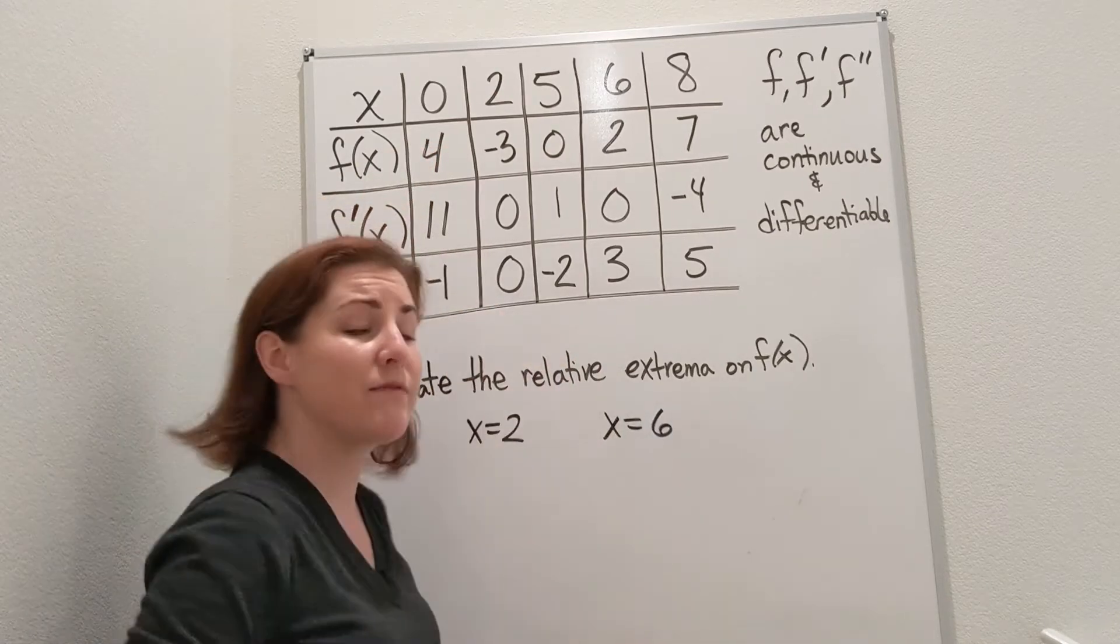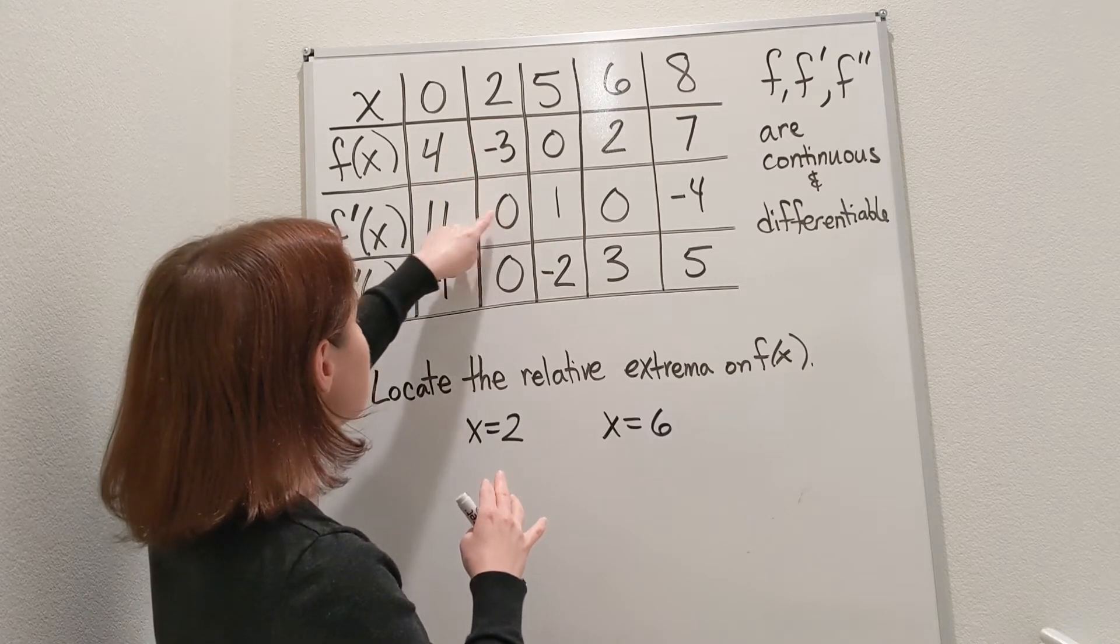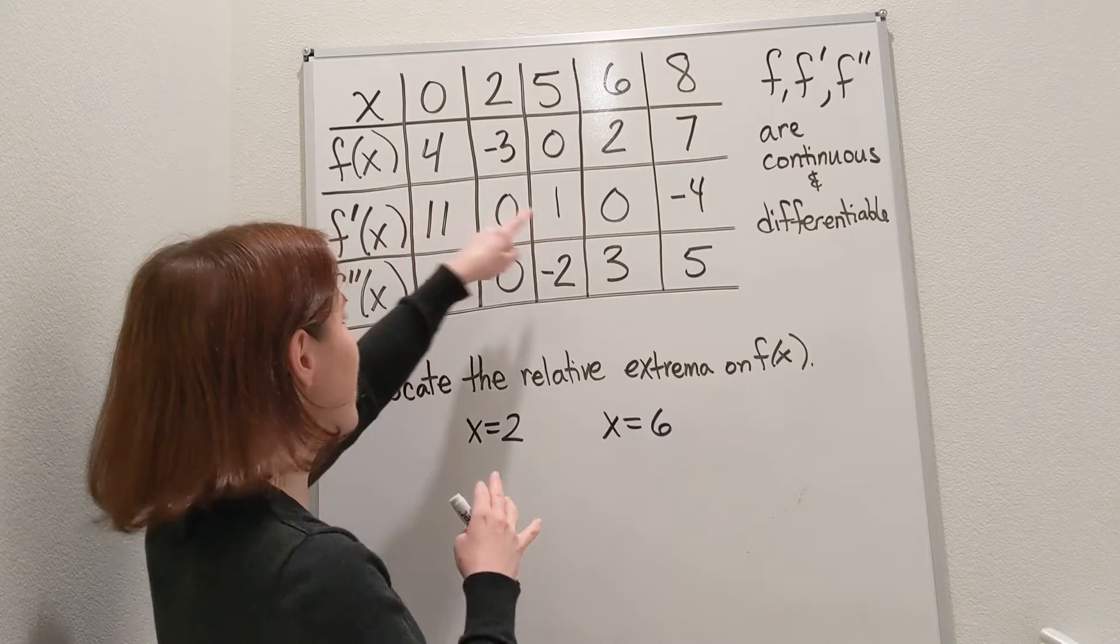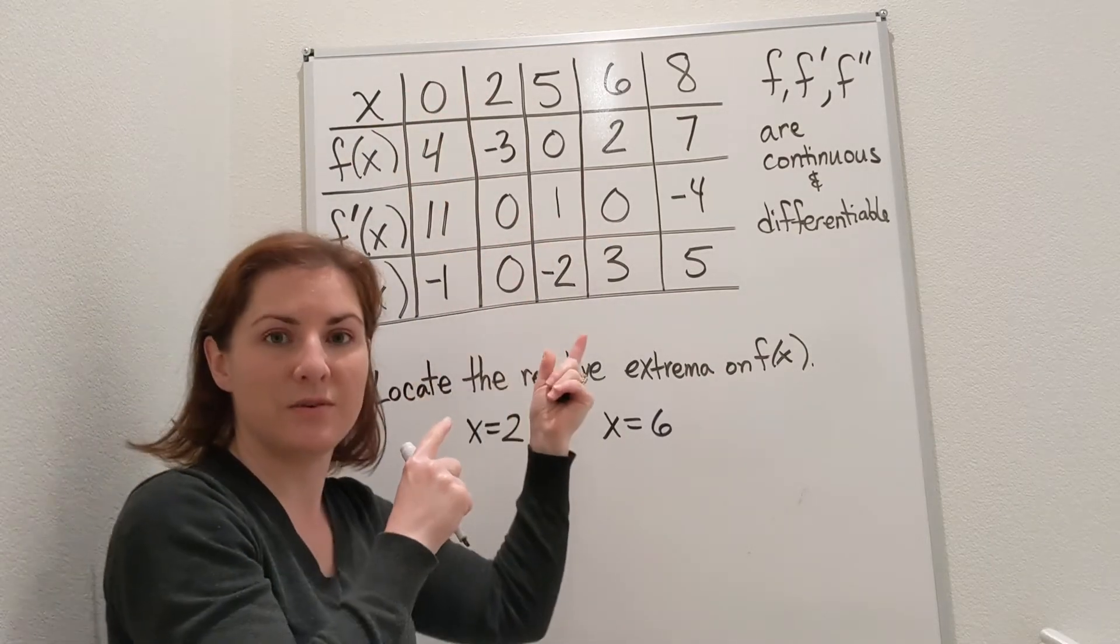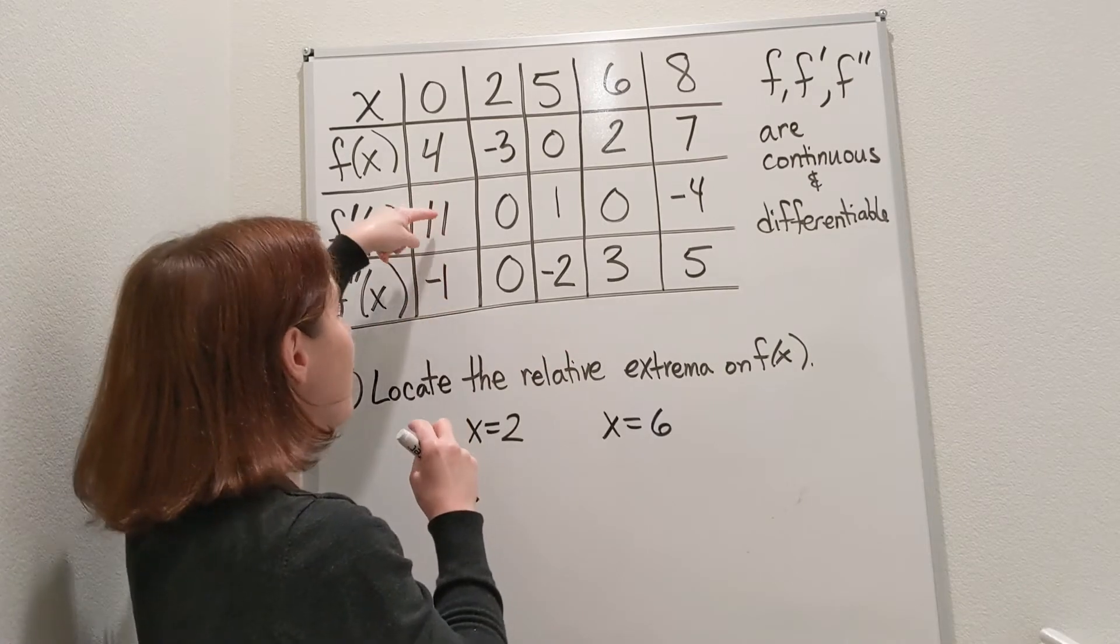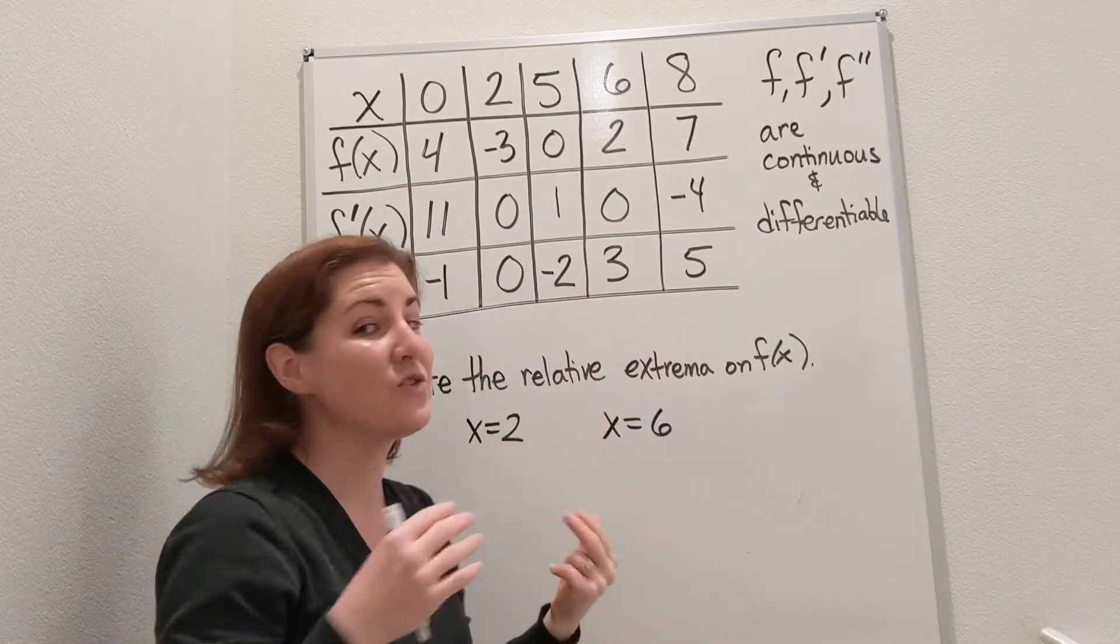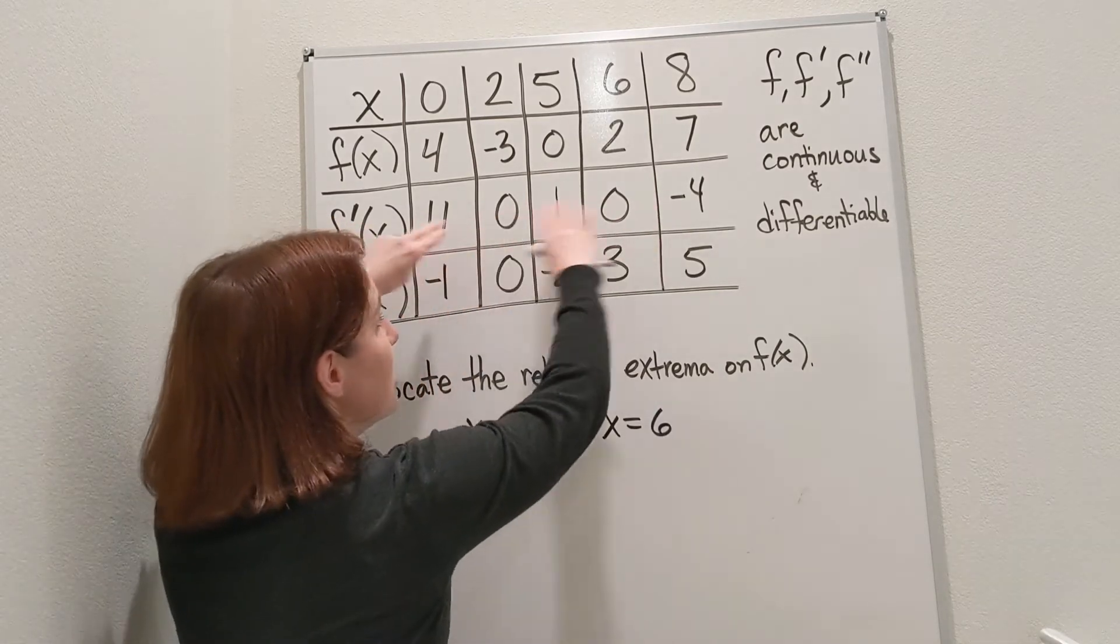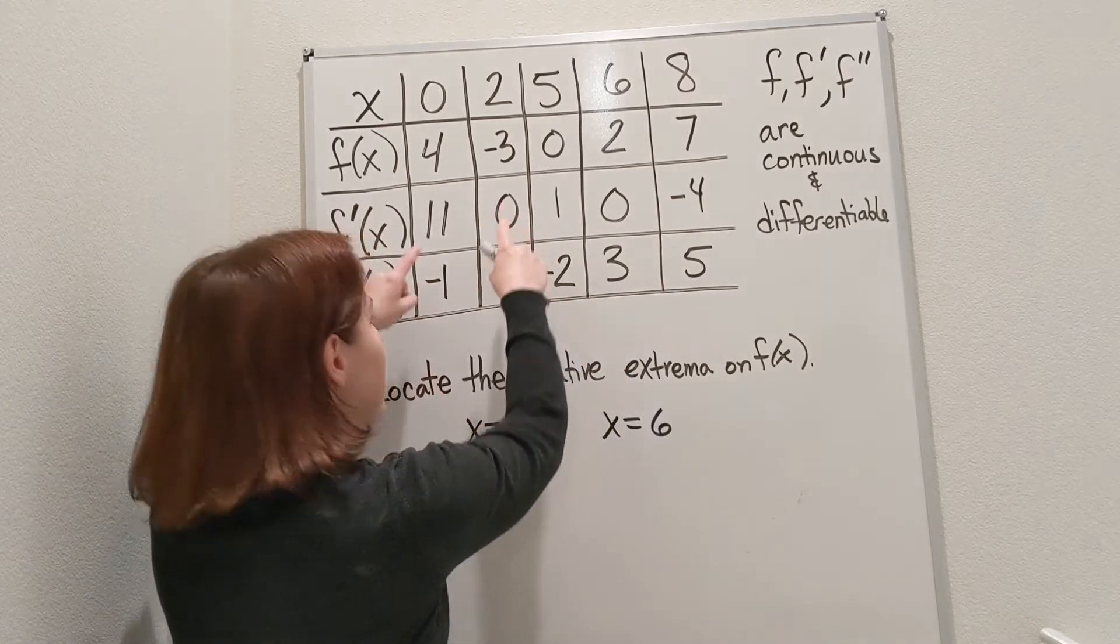Once I have that information, it's tempting to go to f prime and say at x=2 we've got a positive first derivative on each side. But I can't use that information—it's way too far away from x=2. All the way over at zero, the graph could go up and down 100 times between zero and two. We just don't know. There's not enough information to use the first derivative to get increasing and decreasing information.